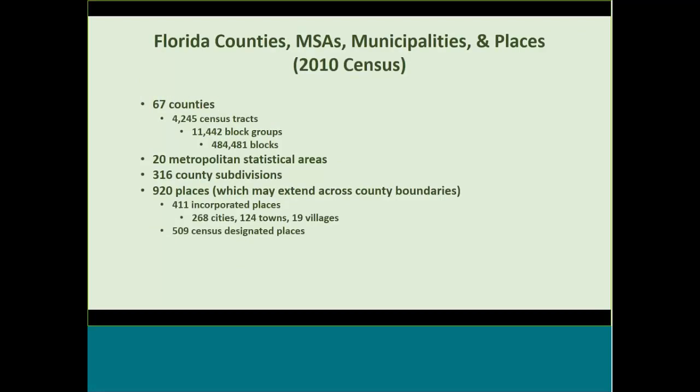If I'm looking below the state level at counties and sub-areas, be aware that there are 67 counties in Florida, and I'd also look at federal resources like the census. Counties are grouped into 20 metropolitan statistical areas for urban areas. You can do sub-counties — there are 316 county subdivisions; for example, my home county of Orange County has six subdivisions in the federal census resources. You can look at places, but place boundaries tend to change over time. There are 411 incorporated places in Florida, plus another 509 other places that are identified but not incorporated.